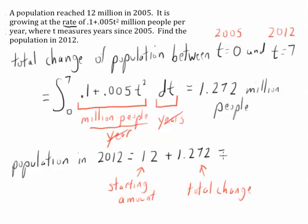And of course, you can add these together and get 13.272 million people.